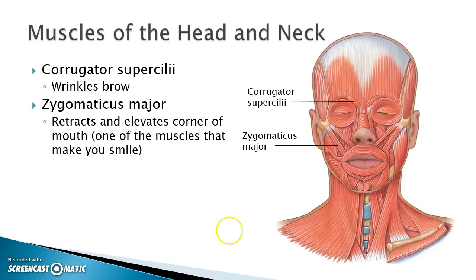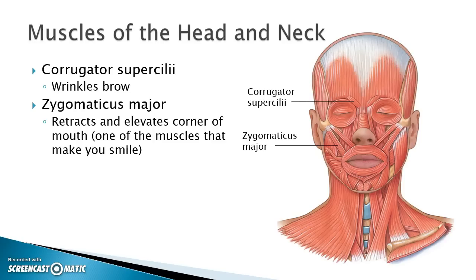Another muscle is the corrugator supracilli. Superior, meaning superior to the eyes, or the eyelashes, which are the cilli — meaning hairs. This is also going to wrinkle the brow, like if you're frowning. Corrugator means to wrinkle; if you think of corrugated cardboard, it has a wrinkled appearance.